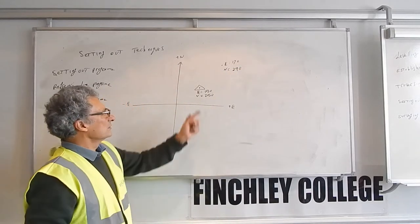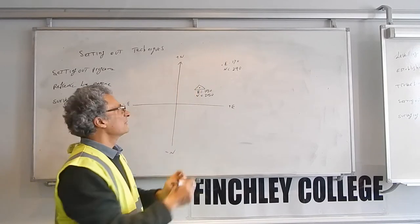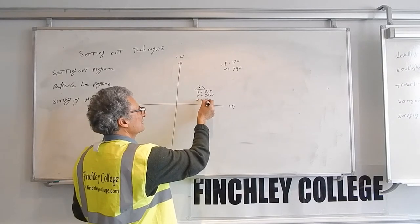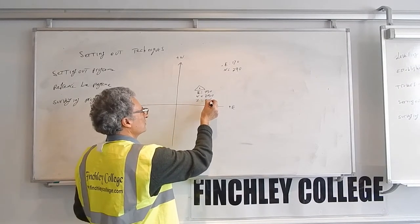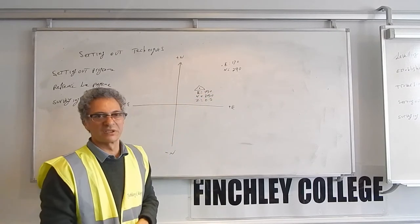First, everything you do on site is that you do a free station program and you will find out the east, north, z of the instrument. For example, easting 150, northing 250, height 0.5 or whatever it is.